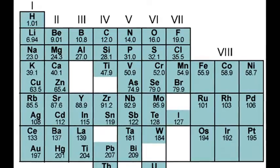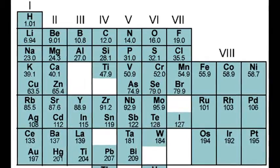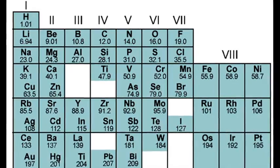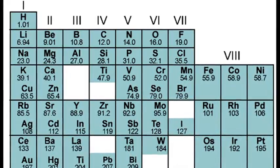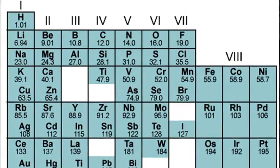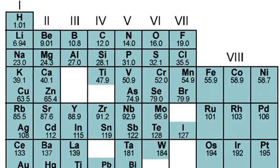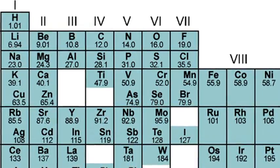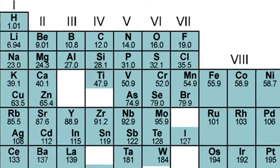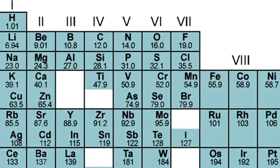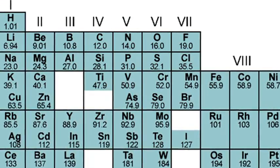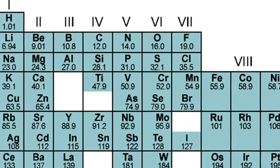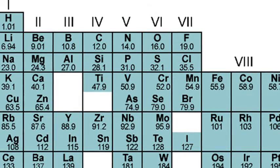While he was not the first to attempt to classify the chemical elements, Mendeleev's system was the one that went on to gain universal acceptance. Mendeleev had trained as both a teacher and an academic chemist, and in the early 1860s published a prize-winning textbook that placed him at the forefront of chemical education.